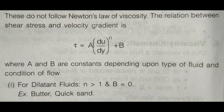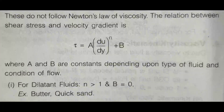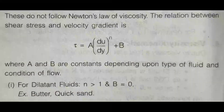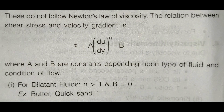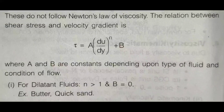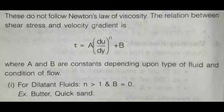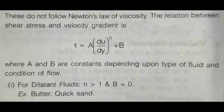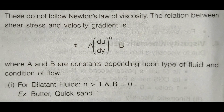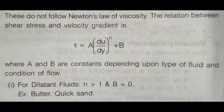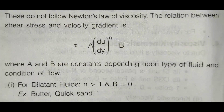Non-Newtonian fluids do not follow Newton's law of viscosity. The relation between shear stress and velocity gradient is given as: tau equals A times (du/dy) raised to n, plus B, where A and B are constants depending on the type of fluid and conditions. For dilatant fluids, n is greater than 1 and B equals 0. Examples of dilatant fluids are butter and quicksand.